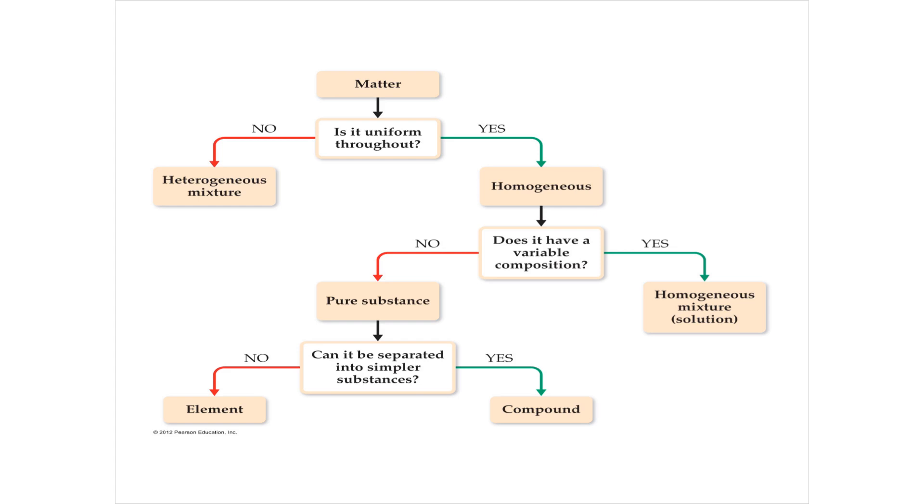But if it doesn't have variable composition, if it has the same composition everywhere then you have a pure substance and then pure substances are either one type of matter which is an element or more than one type of matter which is a compound.